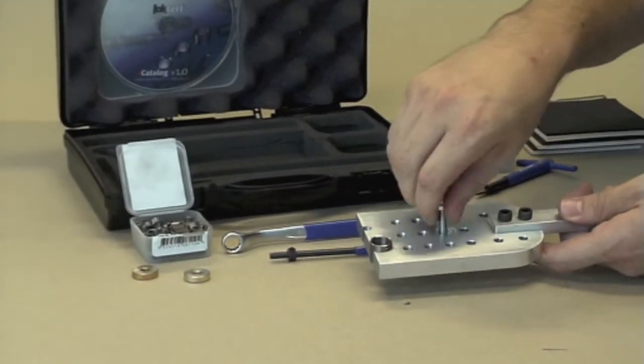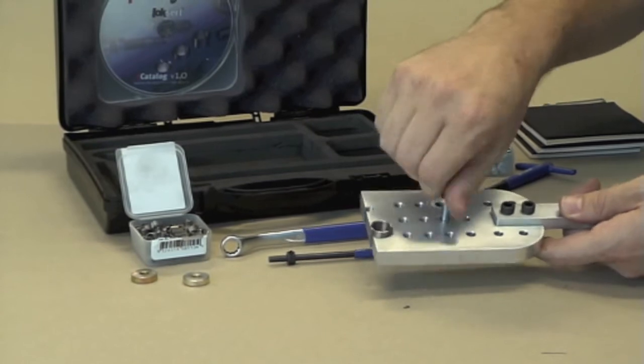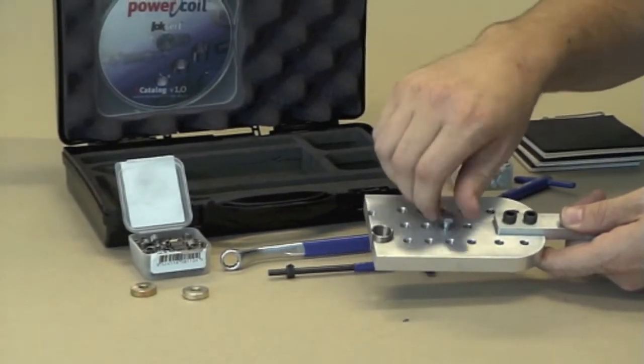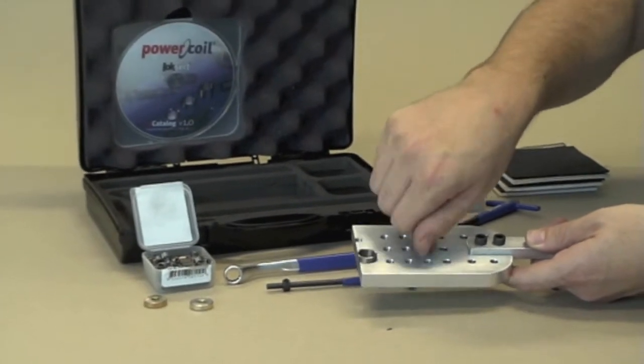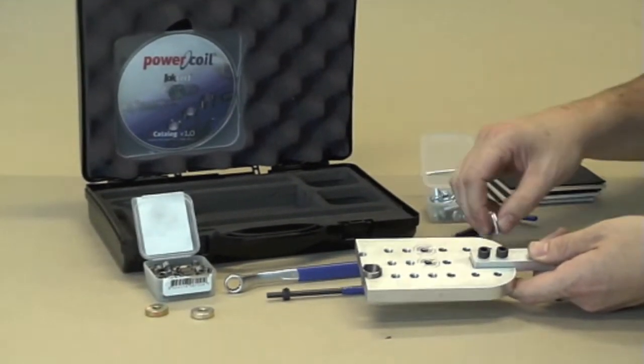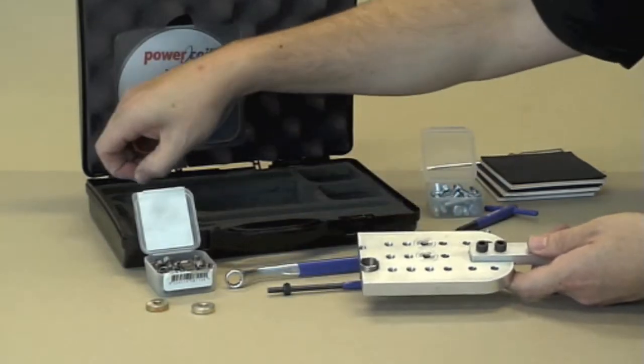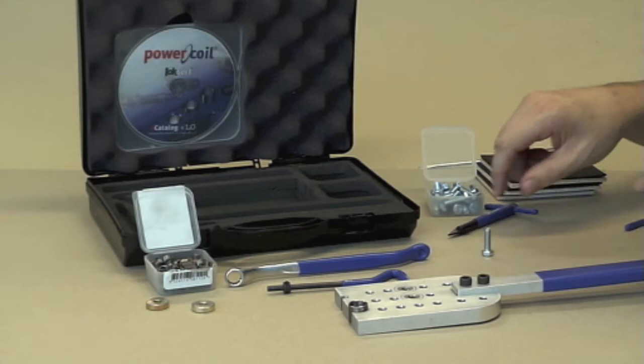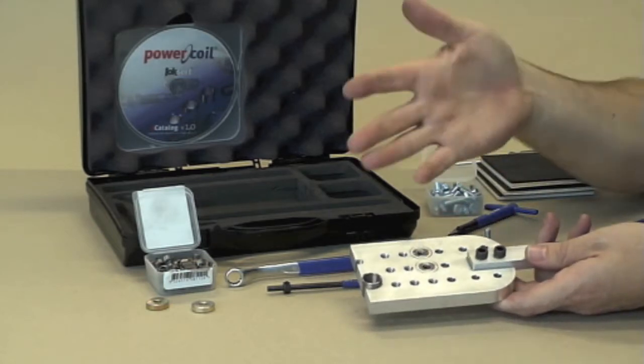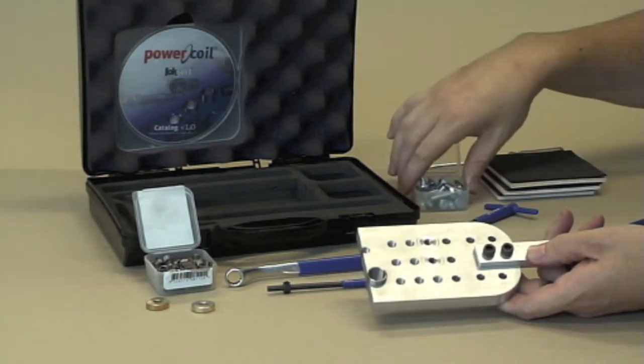Now that we've seen how to install the insert, as you can see it's a very simple process. Unlike some other threaded insert repairs, there's only four steps: drilling, tapping, installing, and breaking the tang. And you're pretty much done.